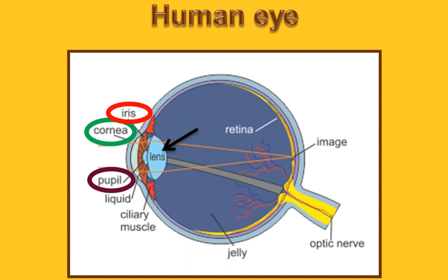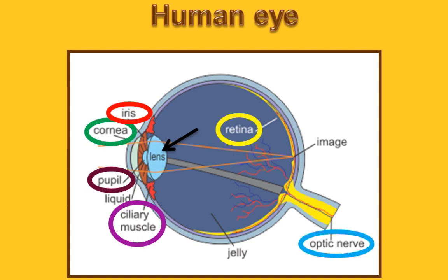The eye lens, which is a convex lens, helps to focus the image of objects on the retina. The ciliary muscles help to change the curvature of the lens and to change its focal length. This lens system forms an image on a light-sensitive screen called retina. The light-sensitive cells in the retina then produce electrical signals, which are carried by the optic nerves to the brain, and we register the image.